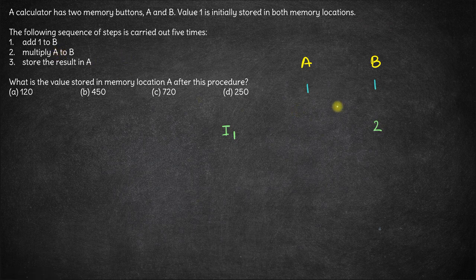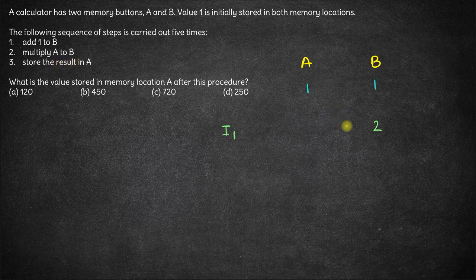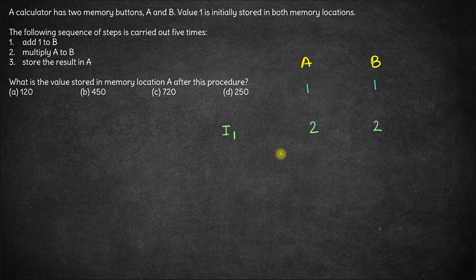Then multiply A to B: 1 times 2 equals 2, and store this result in A. So A becomes 2. After the first iteration, the values are A equals 2 and B equals 2.